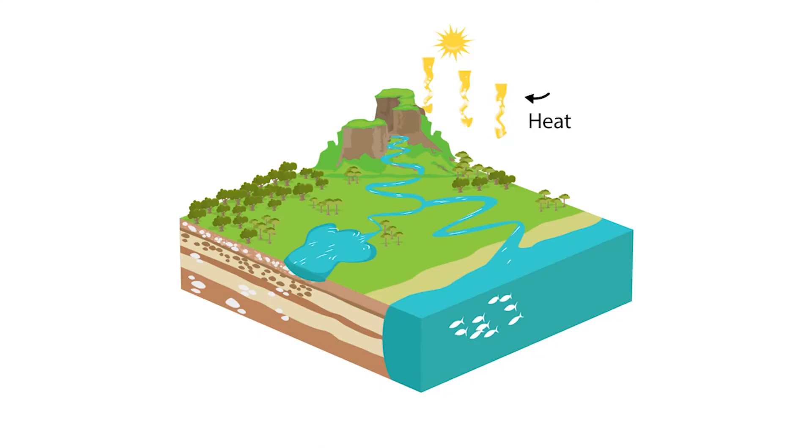When the Sun heats the water on Earth, it evaporates turning from liquid to gas. This is also called water vapor.